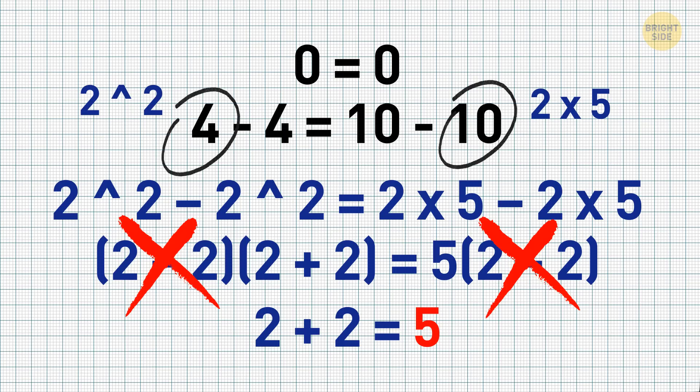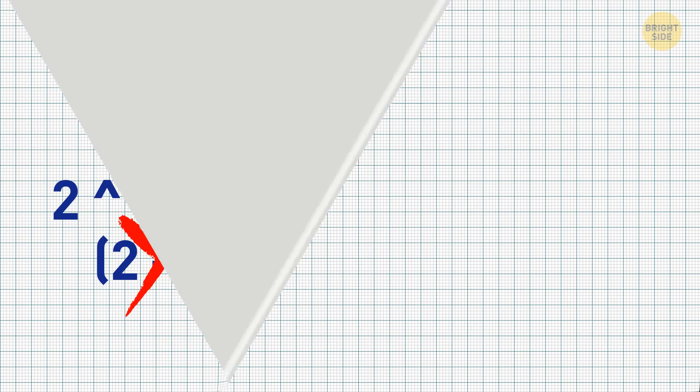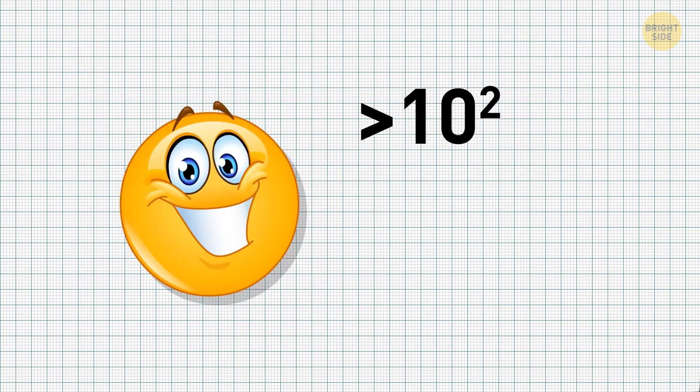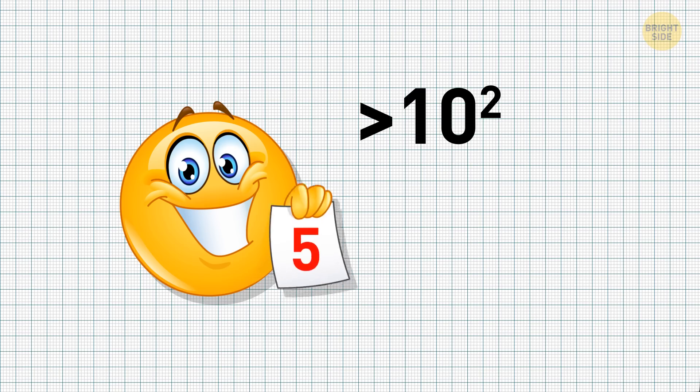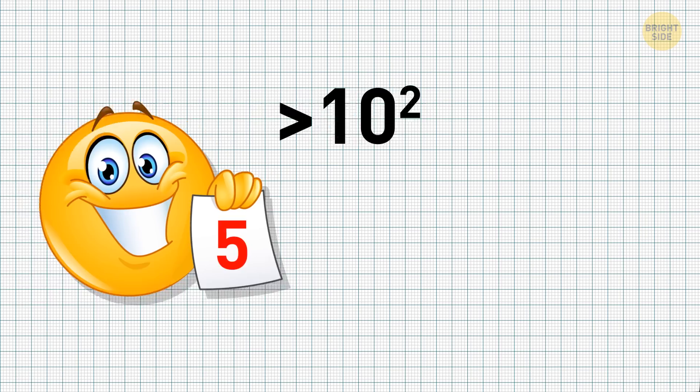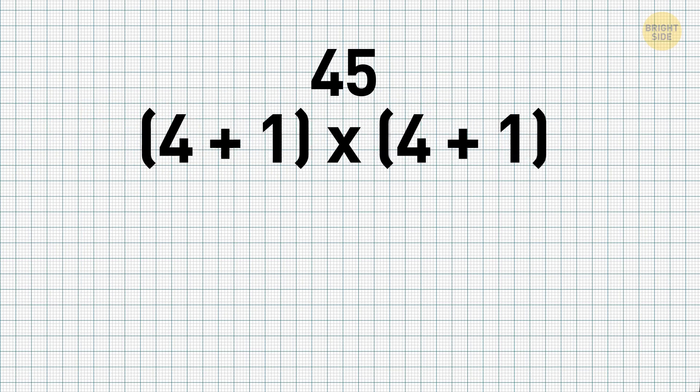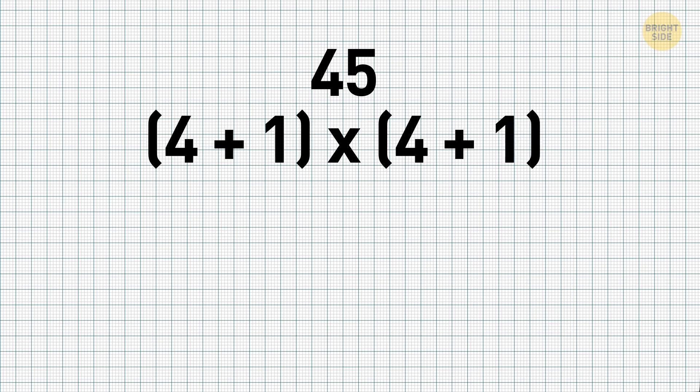Yeah, that's how you prove the impossible. Math can do incredible things. Okay, getting back to real math tricks. Squaring numbers after 10 can be a pain. But there's an easy way to square any two-digit number that ends in 5. Let's take 45 as an example. First, you need to multiply the first digit by itself plus 1.